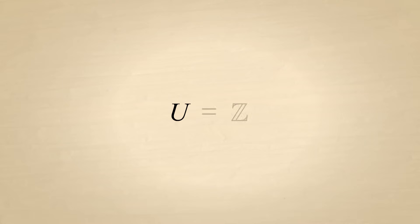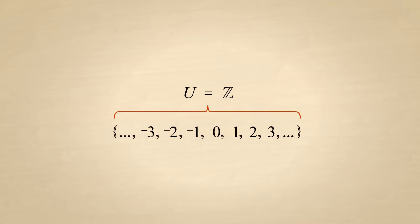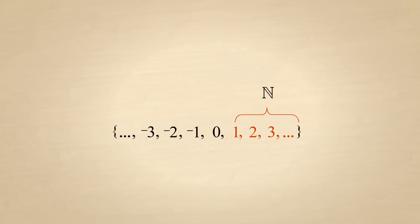As another example, let's say that the universal set is the set of all integers which, as you may recall, is designated by the letter Z. The set of natural numbers is contained in this universal set. So the complement of the set of natural numbers is the set of all integers which are not natural numbers — in other words, all the negative integers plus the number zero.